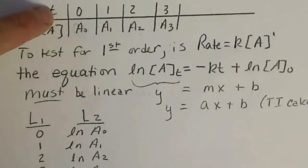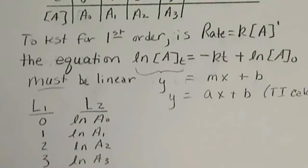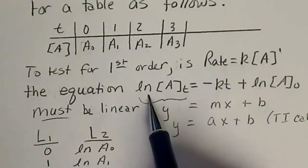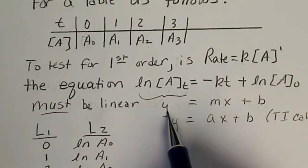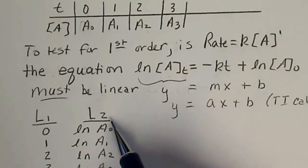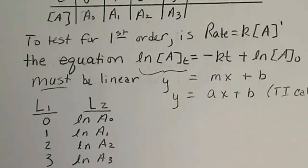So L1 is going to be our times, so 0, 1, 2, and 3 would be L1, and since the natural log of the concentration is in the place of our y-axis, for L2 we are not going to plug in the concentrations, but instead we plug in the natural log of those concentrations.